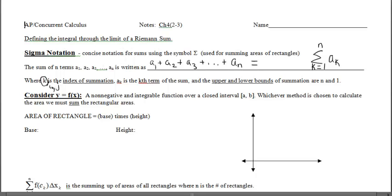Where k is the index of summation, and a-sub-k is the kth term of the sum. The upper and lower bounds of summation are n and 1 — the upper limit and the lower limit. This notation is what we need.